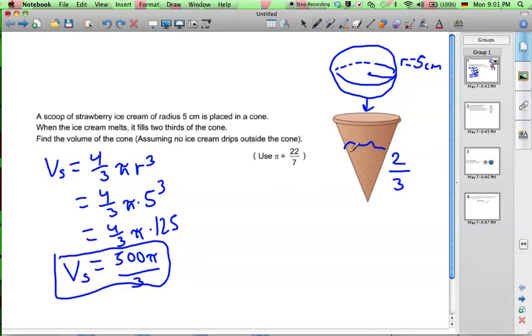That's equal to two-thirds this cone here. So, if I write the formula for the cone, or two-thirds of the cone, two-thirds of the volume of the cone is going to be equal to 500 pi out of three. And now we just need to solve for the volume of the cone.